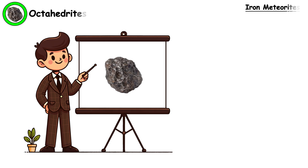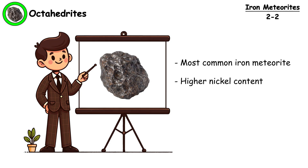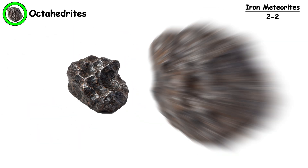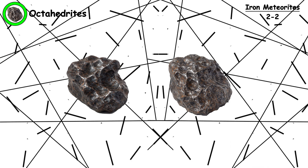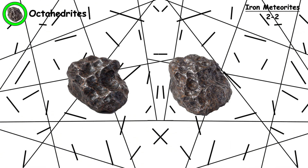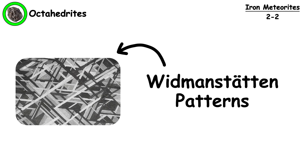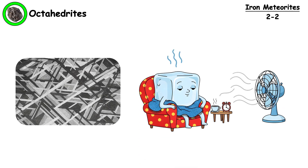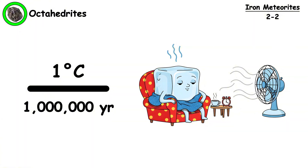Octahedrites. Octahedrites are the most common iron meteorites, containing higher amounts of nickel and iron. Their defining feature is forming geometric patterns that look like alien hieroglyphs, called Widmanstätten patterns. They form only through extremely slow cooling — about 1 degree Celsius per million years.